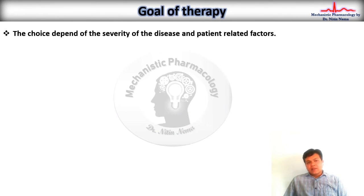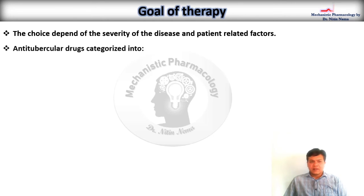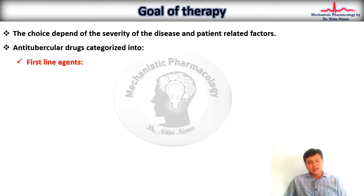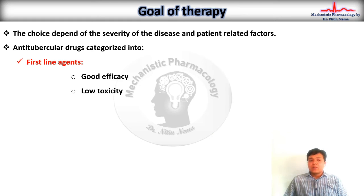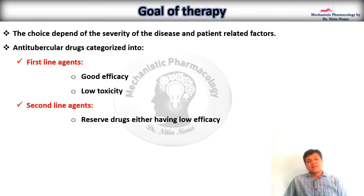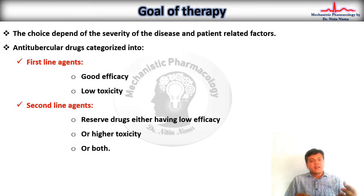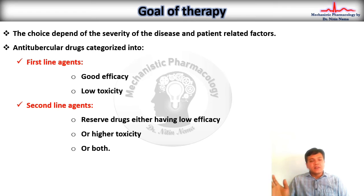The choice of drug depends upon the severity of the disease and patient-related factors. Anti-tubercular drugs are categorized into two groups: first-line agents and second-line agents. First-line agents have very good efficacy as well as low toxicity. They are first-line because side effects are minimal or manageable. Second-line agents are reserved for special cases because they have lower efficacy as well as higher toxicity — both lower efficacy and higher toxicity being present in a single drug. Therefore, second-line agents are reserved drugs as far as anti-tubercular therapy is concerned.